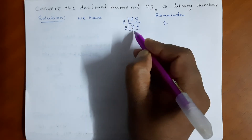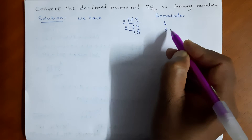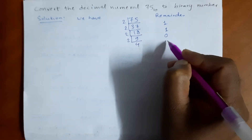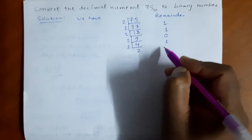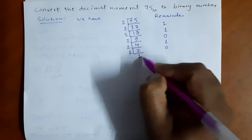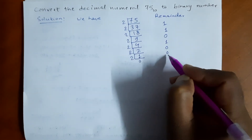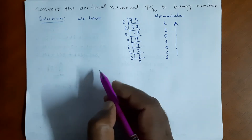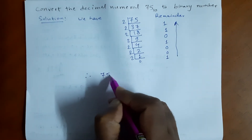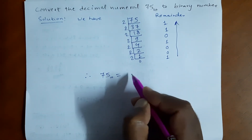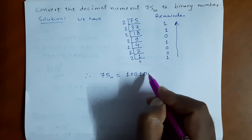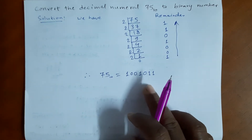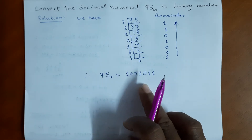Again dividing by 2: remainder 1, then remainder 1, then remainder 0, then remainder 1, then remainder 0. Now we write the remainders in reverse order. Therefore, 75 base 10 equals 1001011 in binary number system. In this way we can change 75 from decimal to binary number.